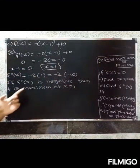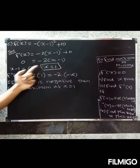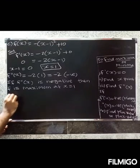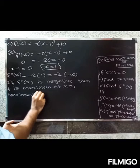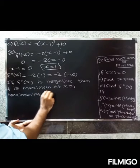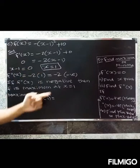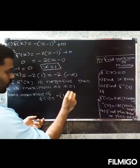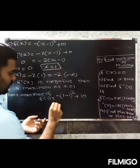So the maximum value occurs at x = 1. To find the maximum value, compute f(1). So find the maximum value of f(1).